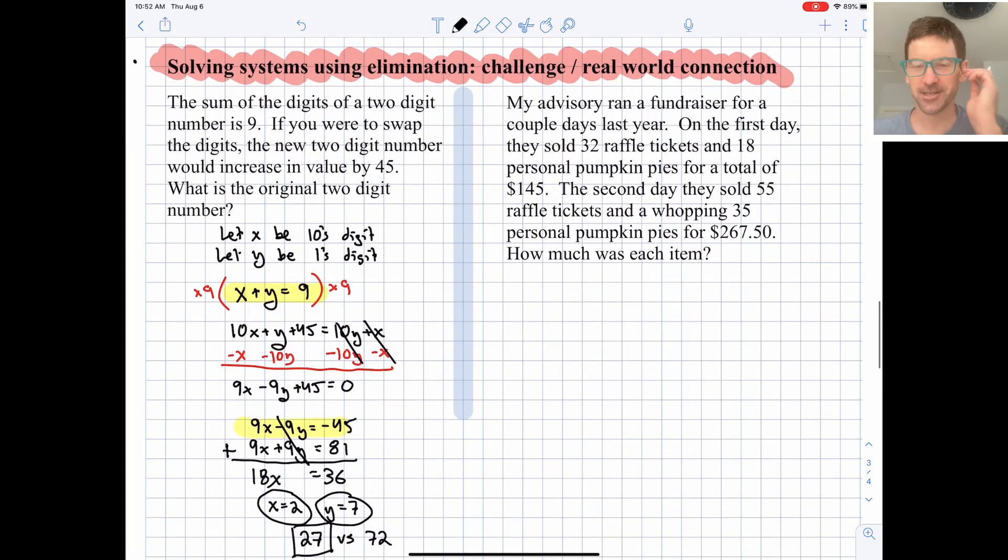Okay, next one, the real world connection problem. My advisory at school ran a fundraiser for a couple days last year. And on the first day, they sold 32 raffle tickets and 18 personal pumpkin pies. And they made $145. And the second day, it looks like they increased their sales quite a bit. And they made $267. So how much was each item?